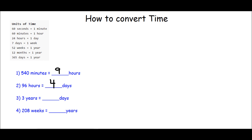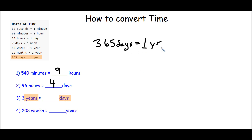Let's go ahead and now solve the third problem. Here we have 3 years equals how many days. We're looking for a relationship between years and days. I can see in my reference chart that there are 365 days in one year, so I'm going to write that down: 365 days equals 1 year. I'm going to draw my line right under those and plug in what I know from my problem — I know that there are 3 years. I ask myself, what happened to 365 to turn it into 1? I divided by itself.